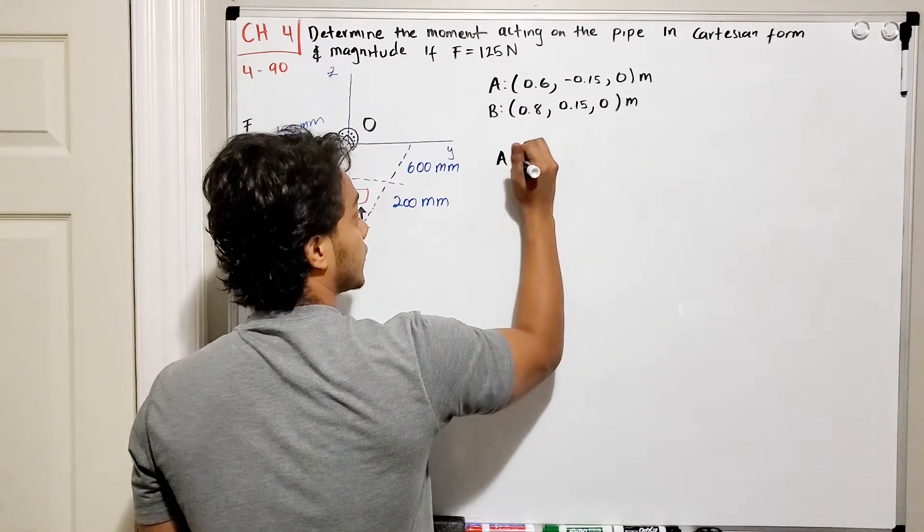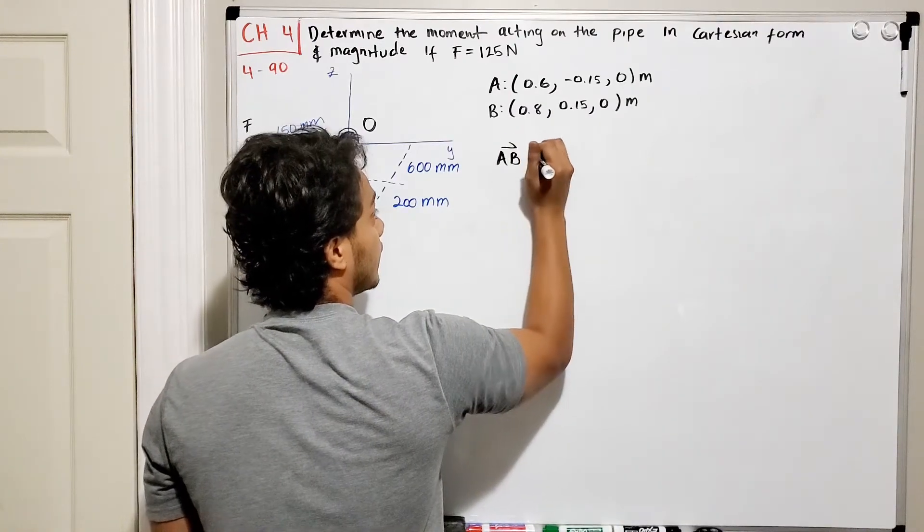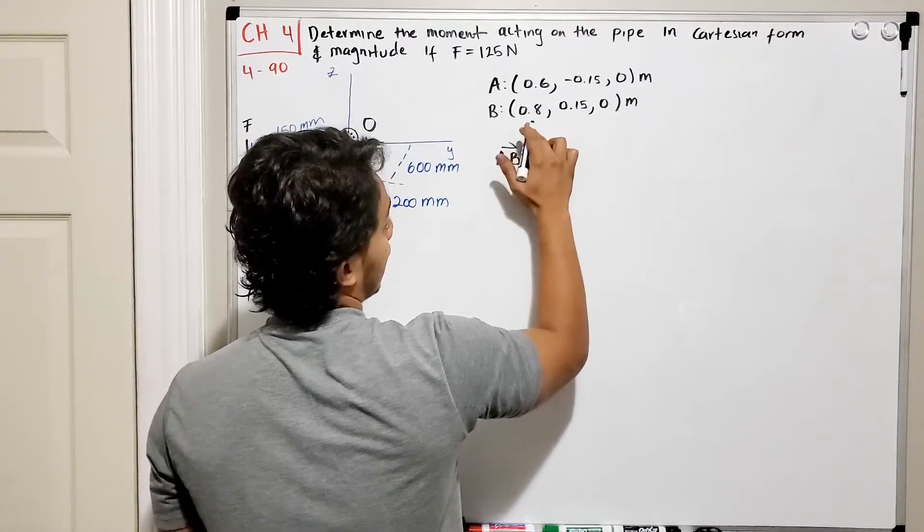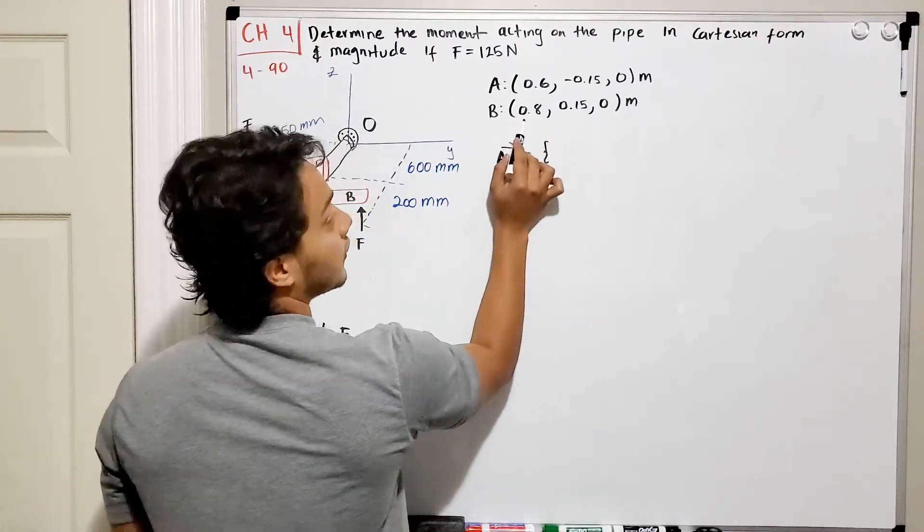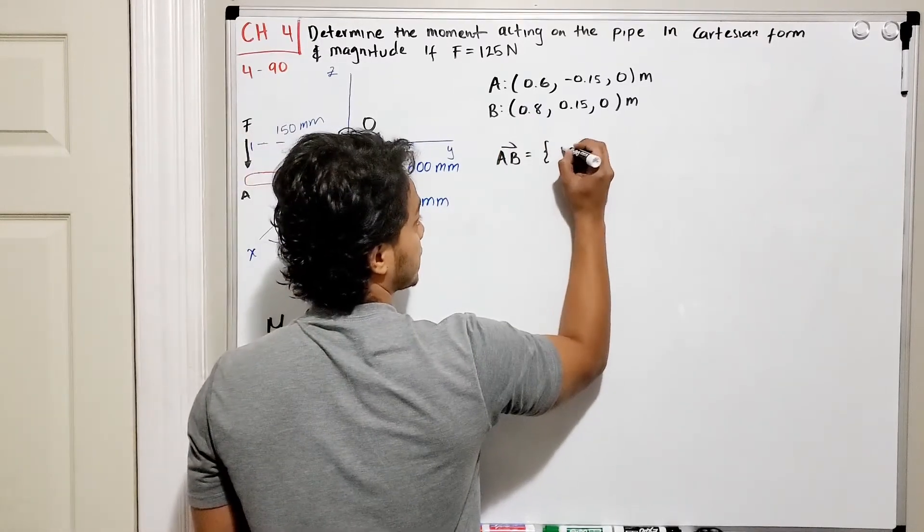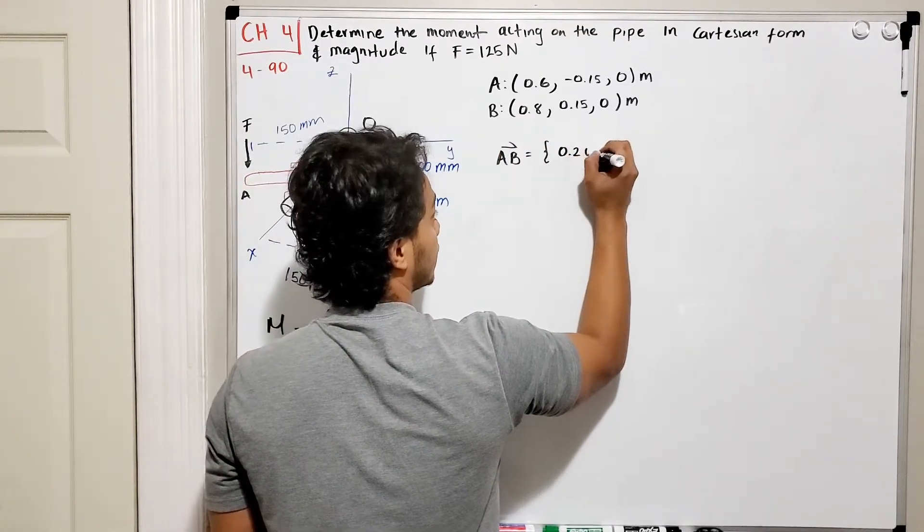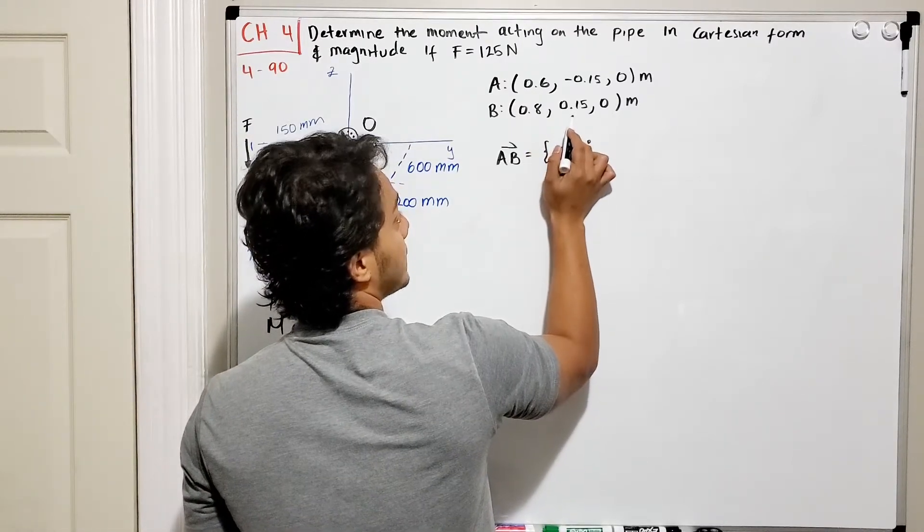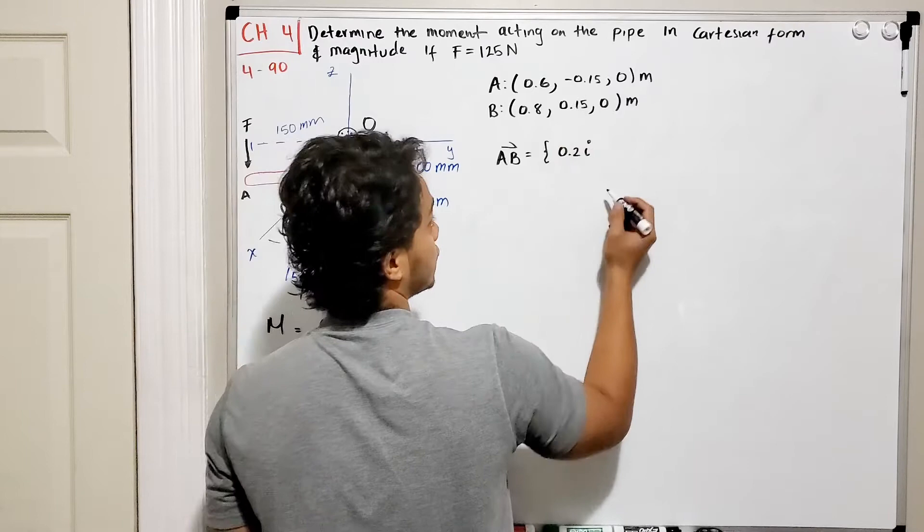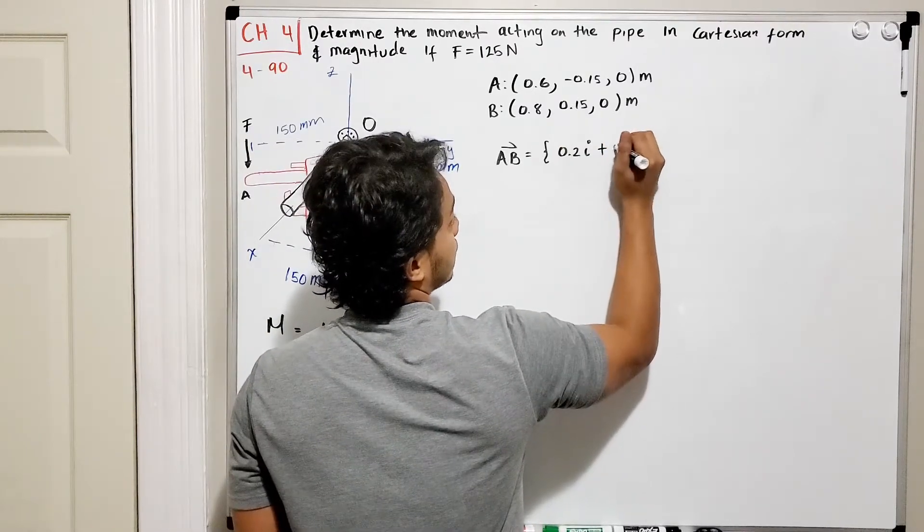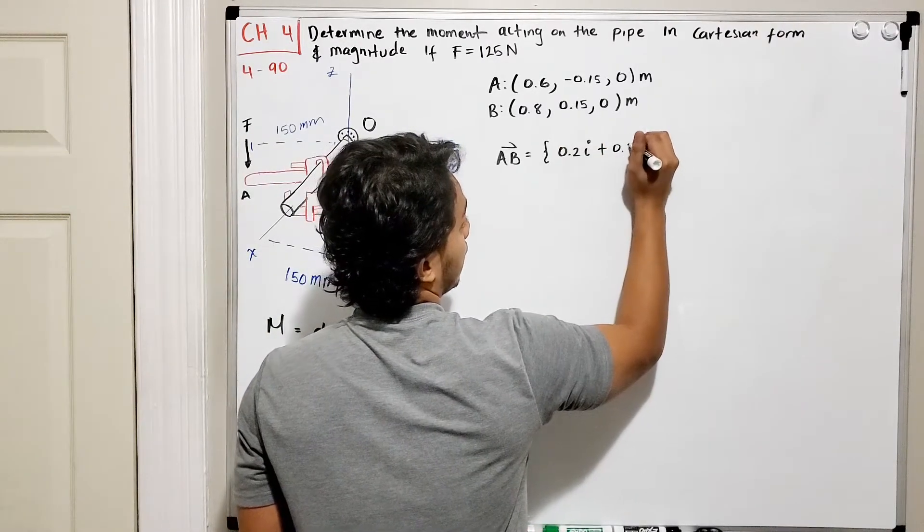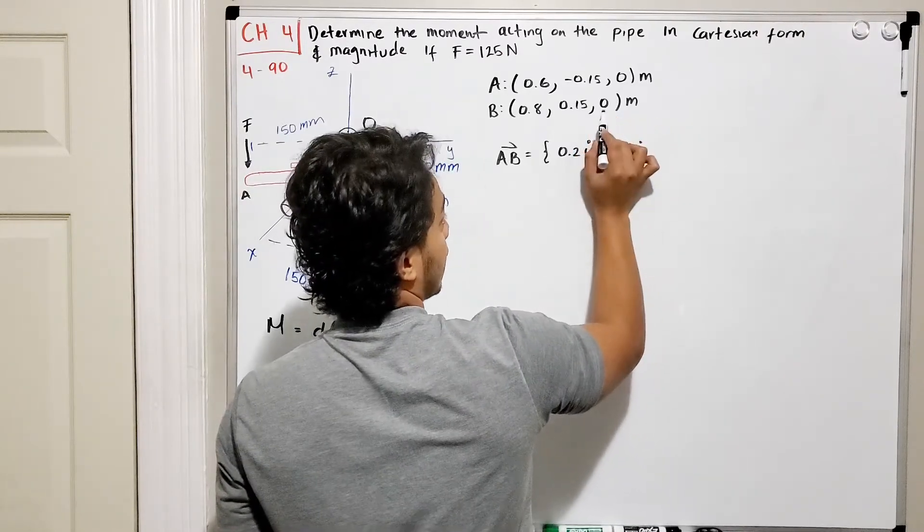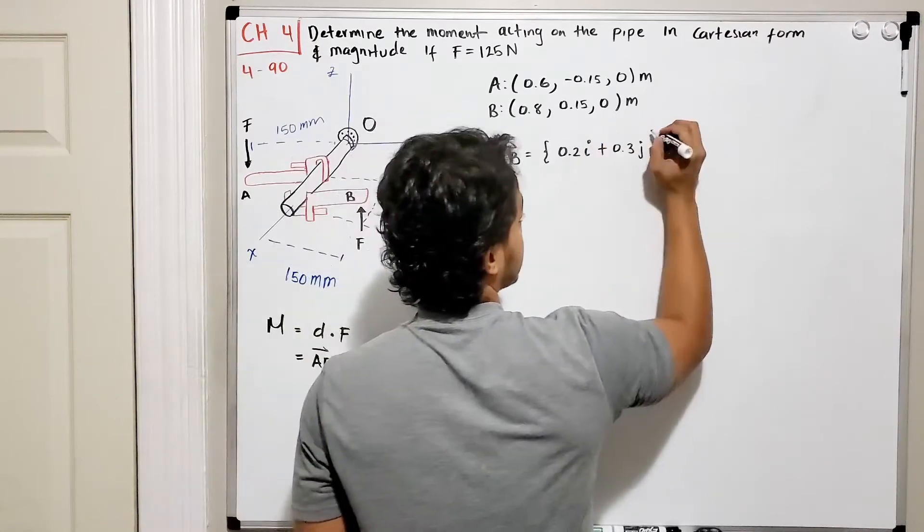So if we want to find our vector distance AB we need to do B minus A. So in the i-direction I have 0.8 minus 0.6 gives me 0.2 in the i-direction. In the y-direction I'll have 0.15 minus minus 0.15 so that's plus 0.3 in the j-direction.